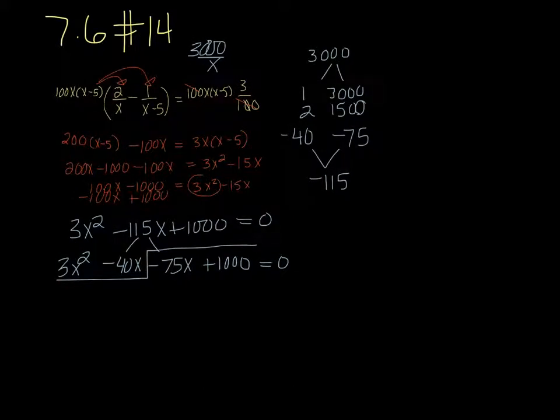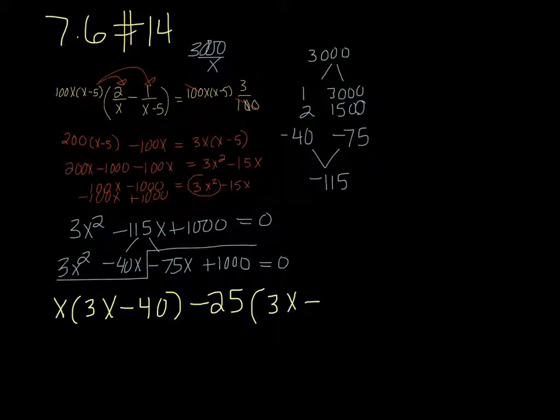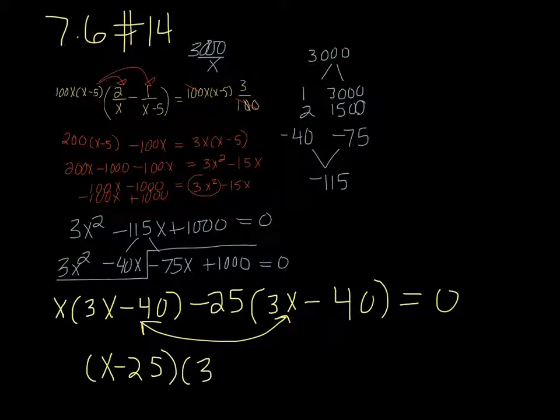And the first part I can take out an X and I'm left with 3X minus 40. And the second part I can take out 25. And I'm going to need to take out a negative 25 because otherwise the signs won't match. And that leaves me with 3X minus 40. Which is what we want. So we see that these pair, these match up. That's what we want. So the factors are X minus 25 and 3X minus 40.